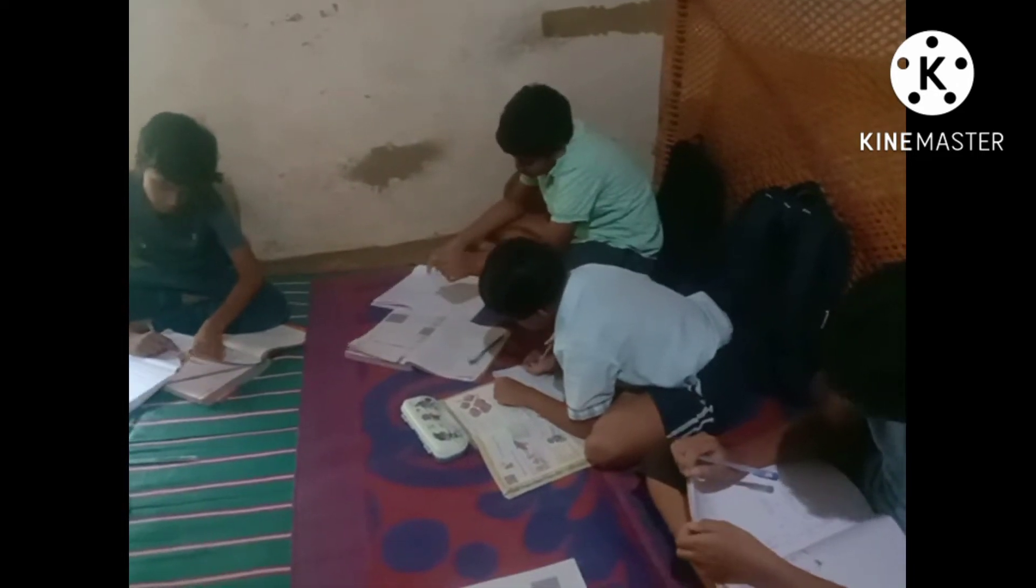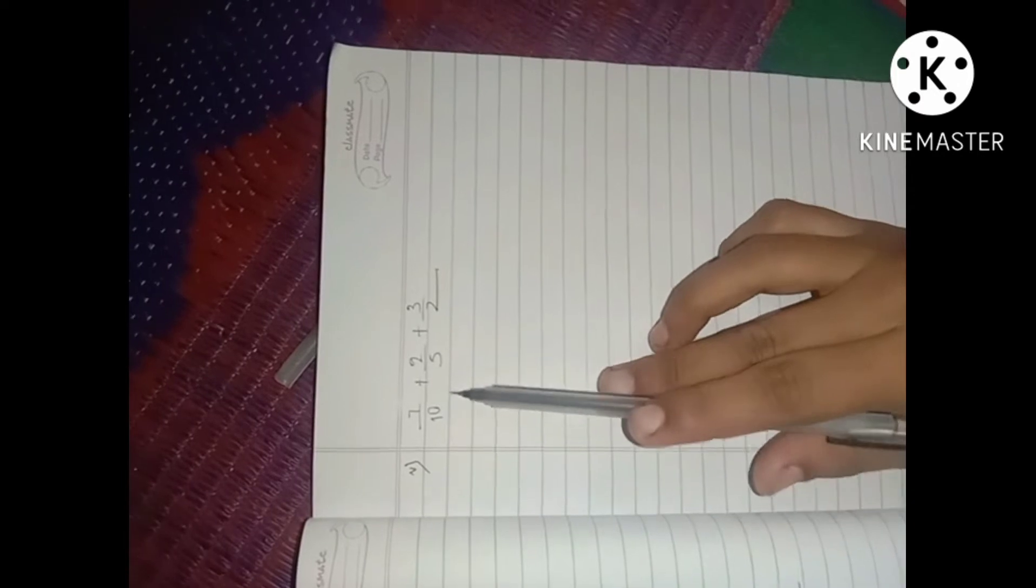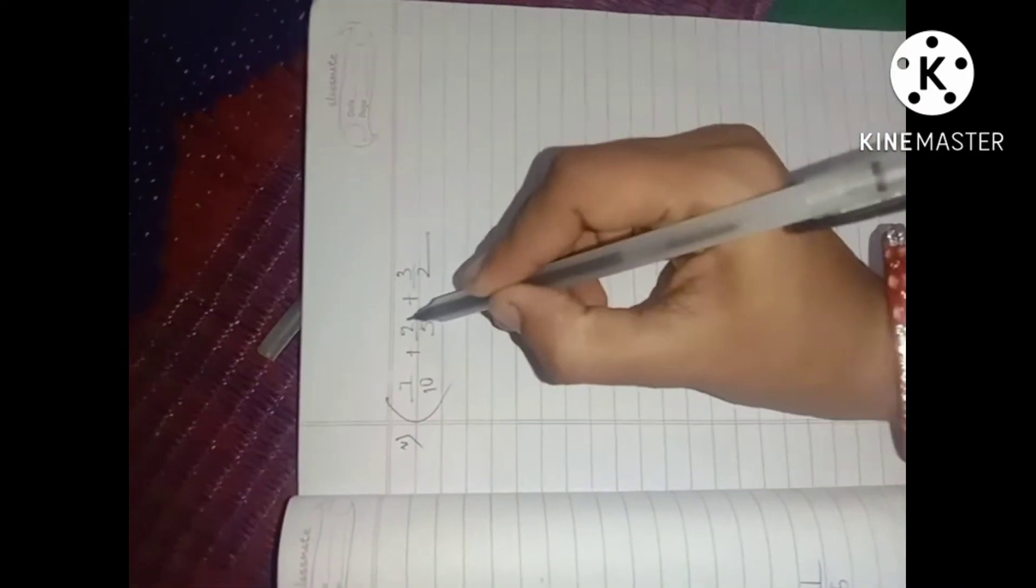5 into 5, 10. Now, 7 by 10 plus 2 by 5 plus 3 by 2.